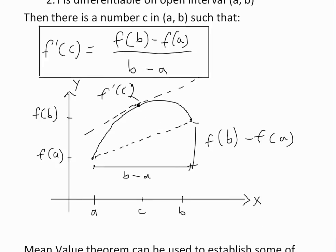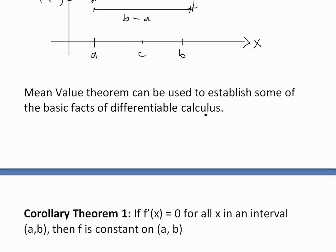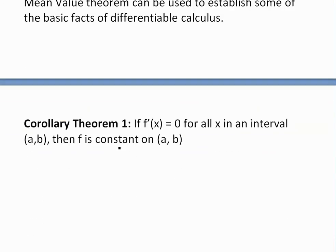What this means is that a number c in between, as this graph shows, has to have the same derivative f'(c) as the overall slope from point a to point b. So this point has the same slope as the interval. Basically, the mean value theorem can be used to establish some of the basic facts of differentiable calculus, and one of the theorems we can get from it is Corollary Theorem 1.